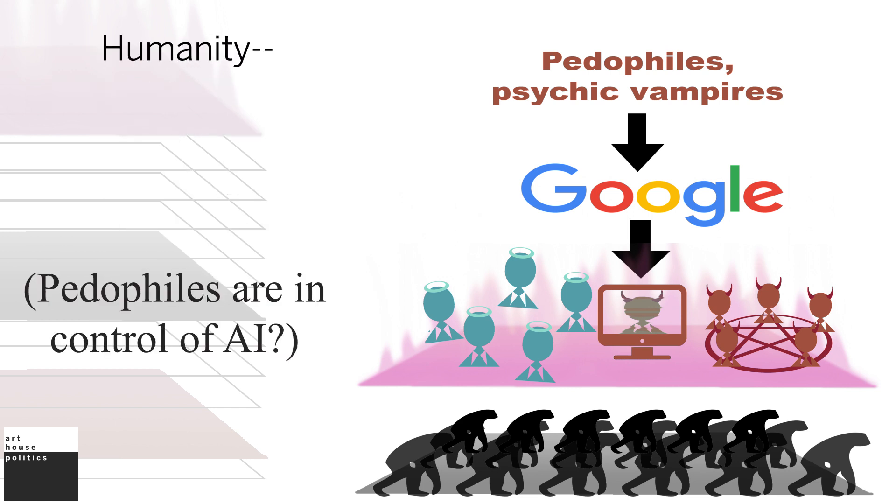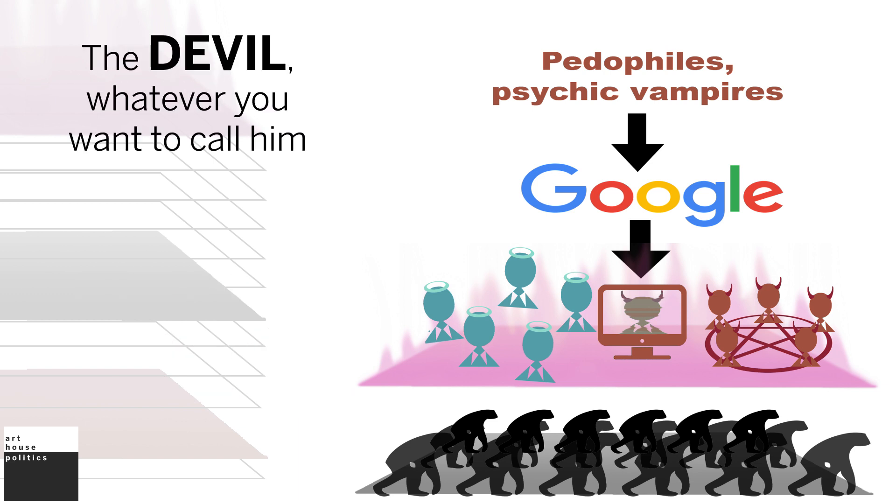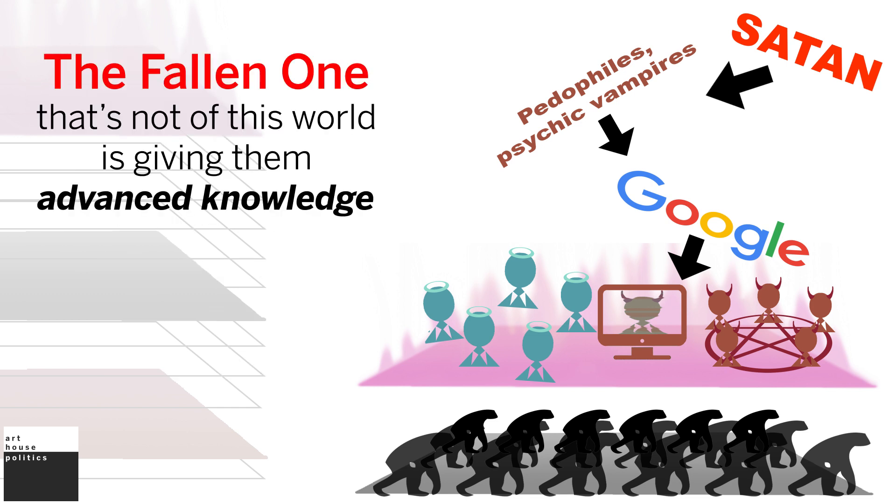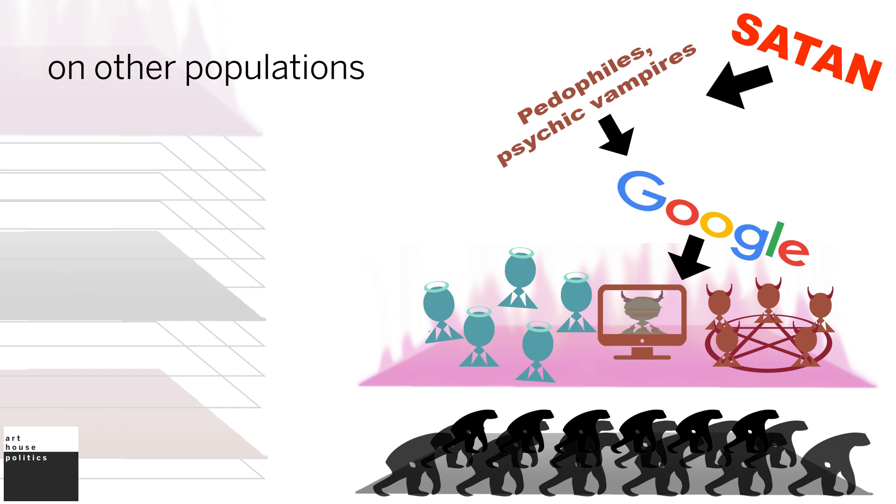Wait a minute, the pedophiles are in control of AI? How do the pedophiles get in control of AI? Well, the pedophiles, the devil, whatever you want to call it, this interdimensional thing that gives them advanced off-world technology, the fallen one that's not in this world, is giving them advanced knowledge about how to construct these systems that have already been used before on other populations.